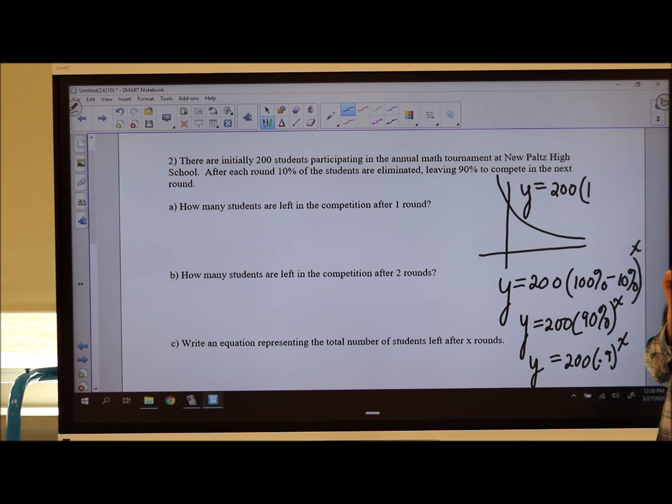It's 1, which represents the 100%, minus the percent that you are losing. 10% in decimal land is 0.10, or just 0.1 to the x.